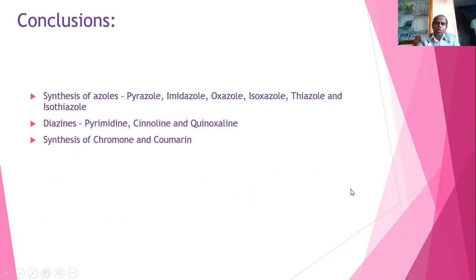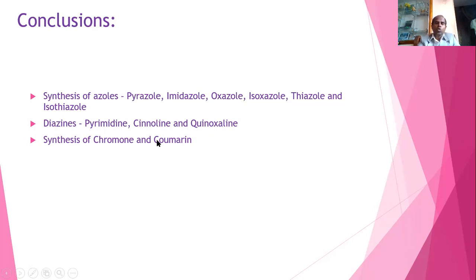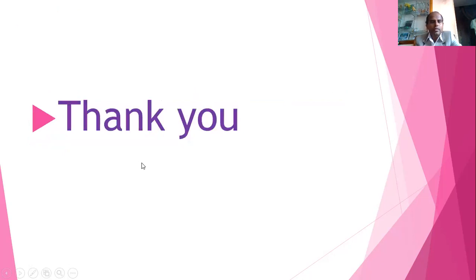In conclusion, this video discussed the synthesis of azoles — including pyrazole, imidazole, oxazole, isoxazole, thiazole, and isothiazole — as well as the synthesis of diazines, particularly pyrimidine, cinnoline, and quinoxaline, and the synthesis of chromone and coumarin. Thank you.